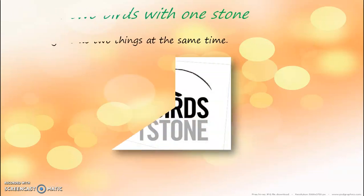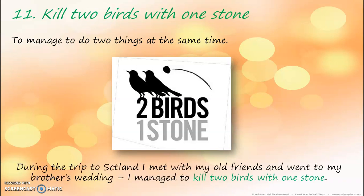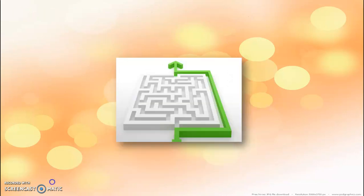The eleventh idiom is 'kill two birds with one stone.' We use the same expression in Albanian. It means to manage to do two things at the same time. As in the example: during the trip to Scotland, I met with my old friends and went to my brother's wedding — I managed to kill two birds with one stone.